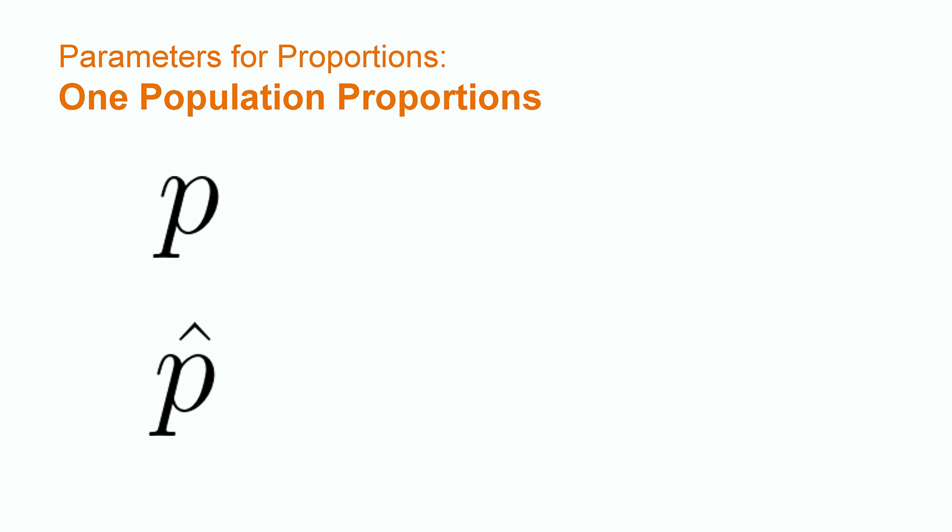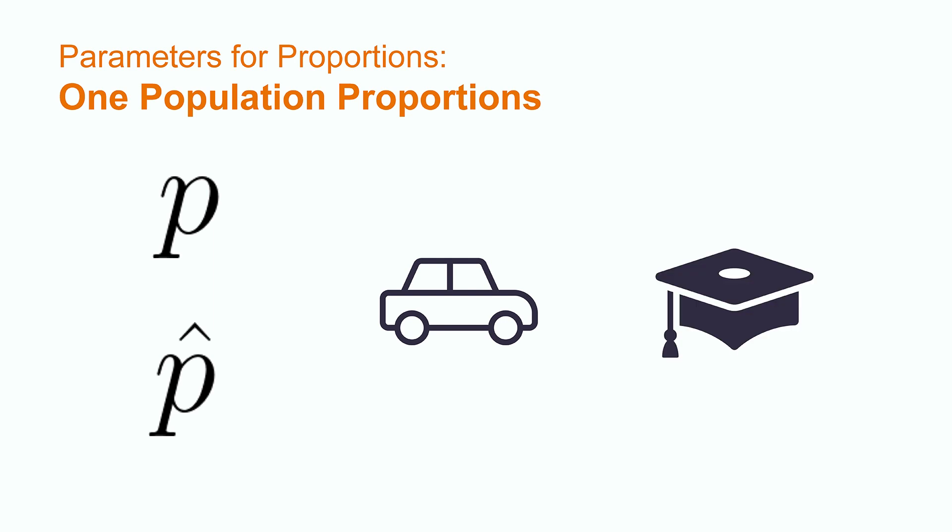Examples of research questions that use p and p-hat would be, what percentage of teenagers 16 to 18 have a driver's license? Or, what proportion of students at a university graduate in four years?